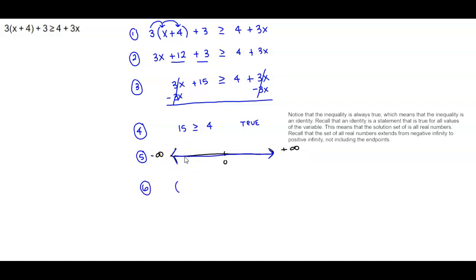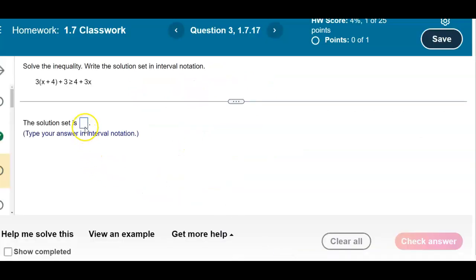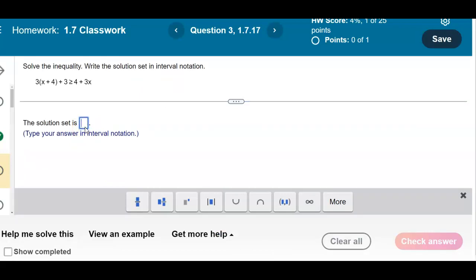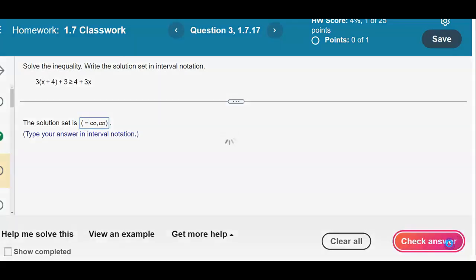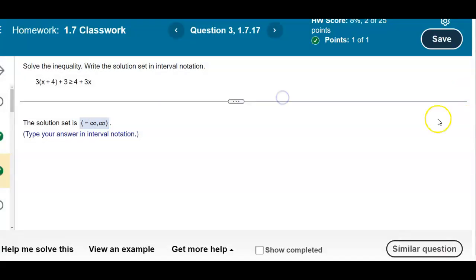And so therefore, we're going to have parentheses negative infinity to positive infinity as the interval notation. So let's go ahead and put in our answer. So we have left parenthesis, negative infinity, comma, positive infinity with the right parenthesis. Check our answer. And then there is our result.